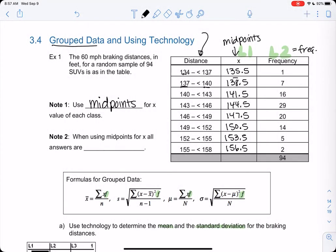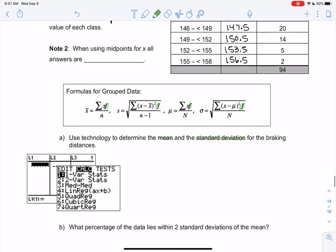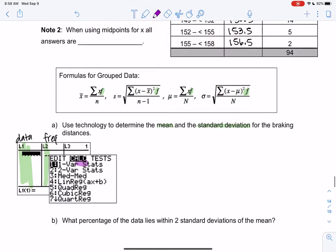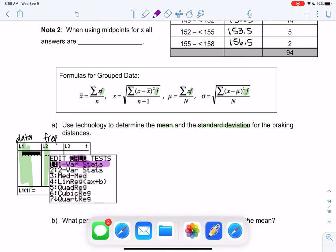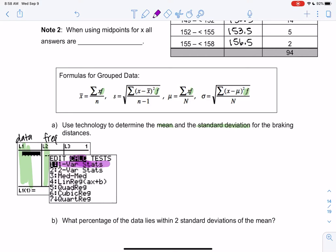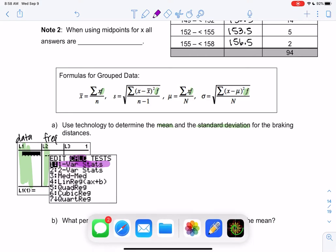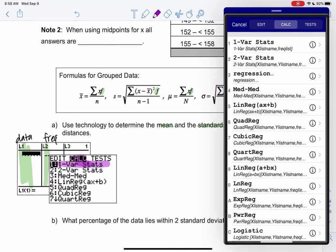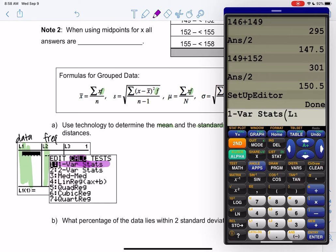Alright, so once you enter the data, we can find the mean and standard deviation. So L1 is the data, L2 is the frequencies. I'll fill in the note in a second, note 2. You might be wondering what goes there. I'm just waiting until we do this. You're going to go back to stat, calc, can do one var stat, but you have to be careful.